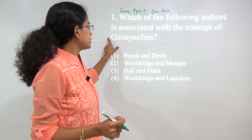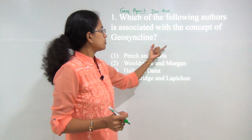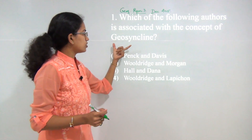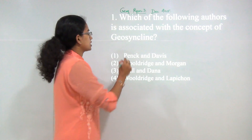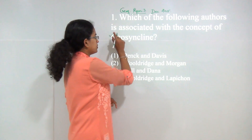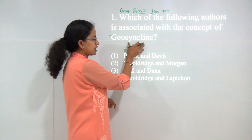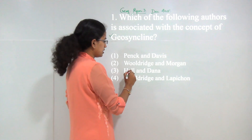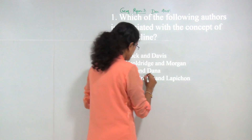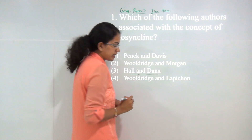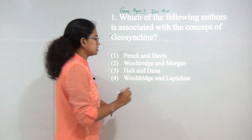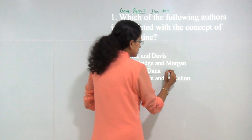The first question: which of the following authors is associated with the concept of geosyncline? When we cover geosyncline, we will discuss the concept in detail. For now, the answer is Hall and Dana, and he gave the concept in 1857.